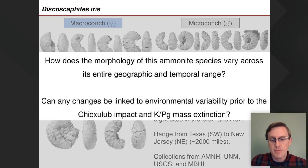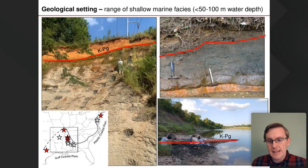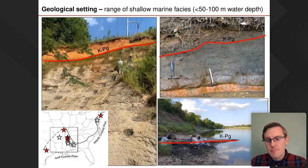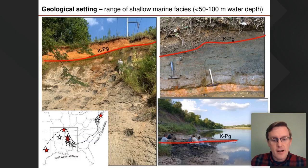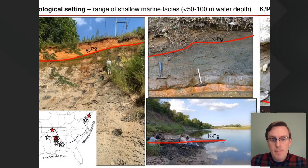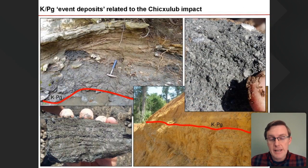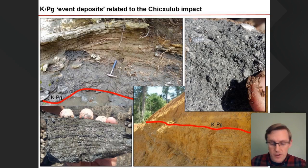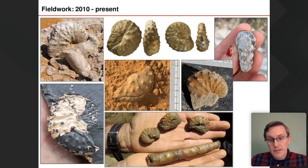It's also interesting to see if any morphological changes can be linked to environmental changes prior to the KPG boundary. The sites we've been looking at are siliciclastic sections, mostly pretty small — the largest is about 10 metres thick — representing shallow marine facies at water depths probably less than 50 metres. Sites discussed specifically are highlighted with red stars on the map. Most sections are demonstrably complete and several contain classic event deposits at the KPG boundary related directly to the Chicxulub impact.